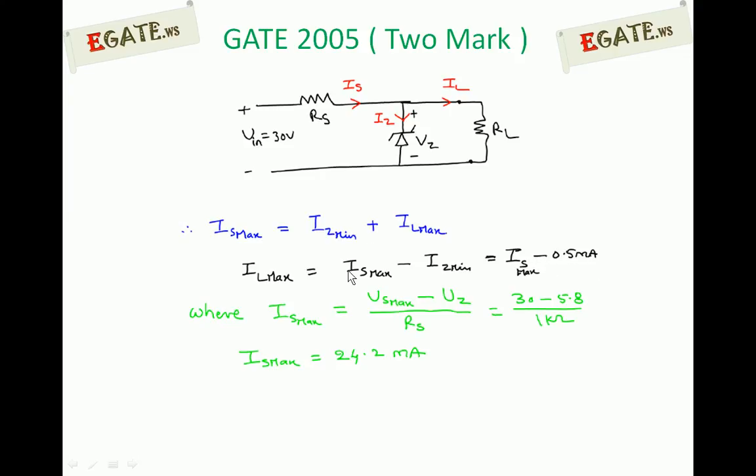How to calculate this Is maximum? Is maximum is nothing but 30 minus 5.8 volts divided by RS. RS value given as 1 kilo ohm in the circuit diagram. 30 minus 5.8 by 1 kilo ohm which is 24.2 milliampere. Is maximum is 24.2 milliampere. And IL maximum is nothing but 24.2 minus 0.5. So that the maximum load current is 23.7 milliampere.